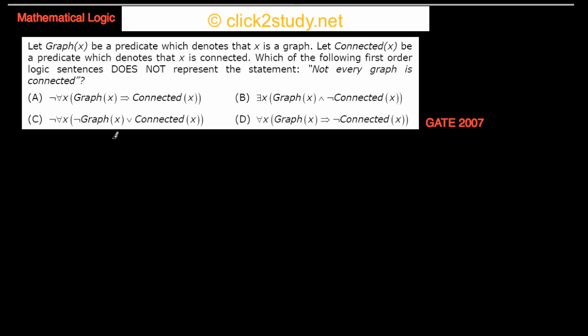Let graph G(x) be a predicate which denotes that X is a graph. Let connected C(x) be a predicate which denotes that X is connected. Which of the following first-order logic sentences does not represent the statement 'not every graph is connected'?